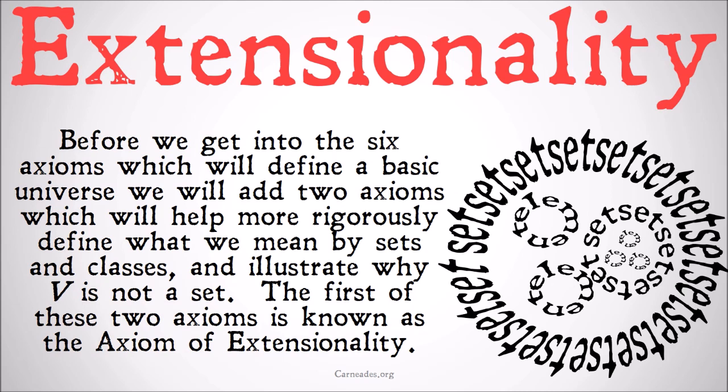To be clear, we're not starting on the axioms that define exactly what V is, what the universal class is, but rather we're talking about specific properties of classes and sets that are just going to define what those are formally, and some of the important characteristics that both classes and sets have.